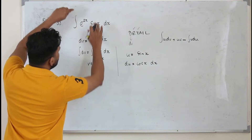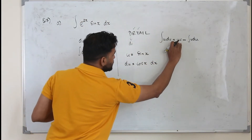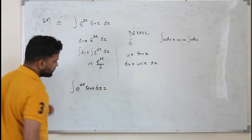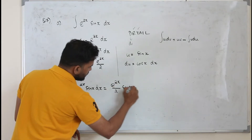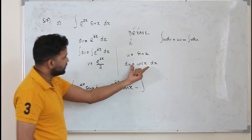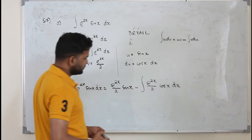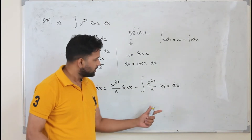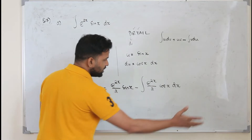We now have u dV in place. Applying integration by parts: integral e to the power 2x sin x dx equals uv minus integral v du, which gives e to the power 2x over 2 times sin x minus integral of e to the power 2x over 2 times cos x dx. Usually, the second integral can be integrated easily, but this is a special case.